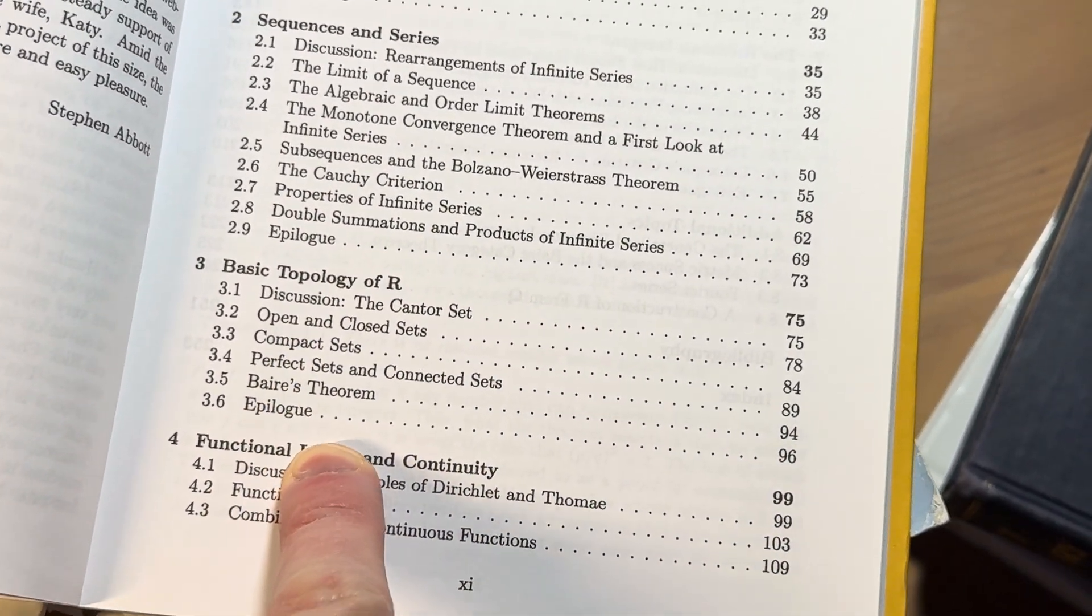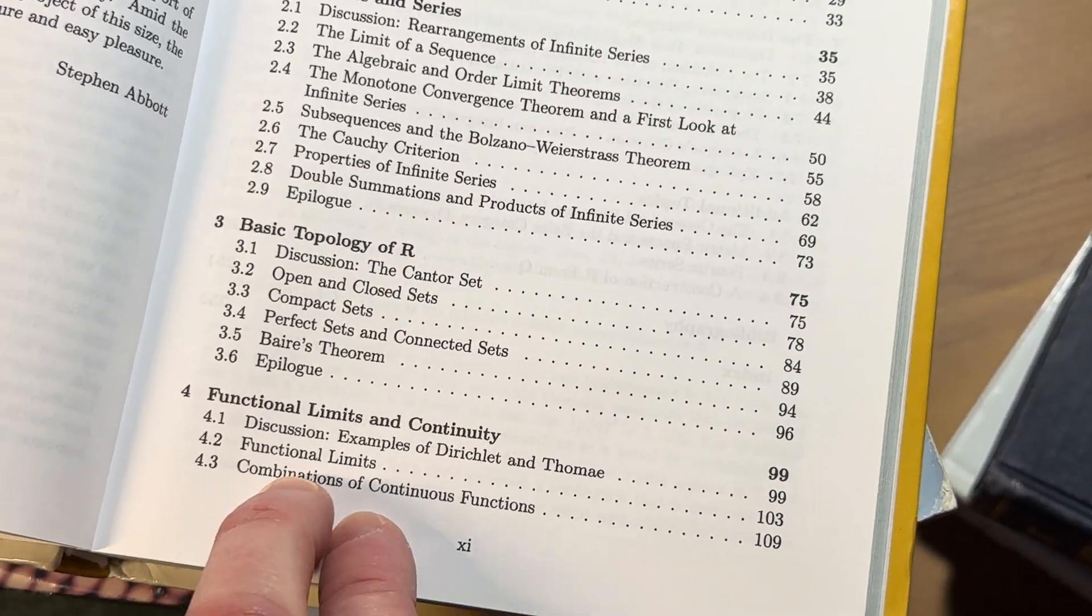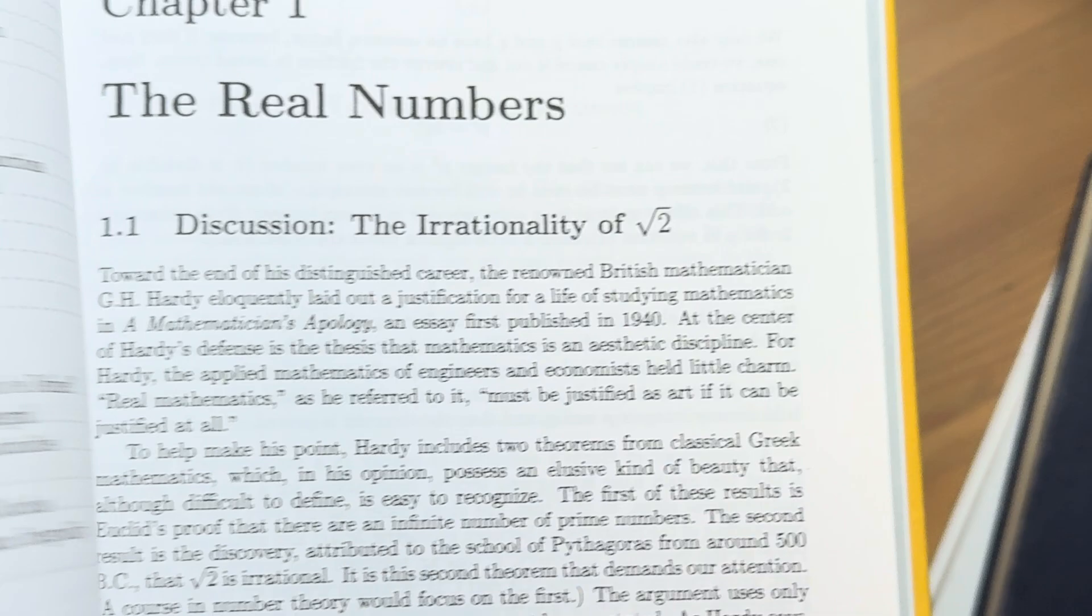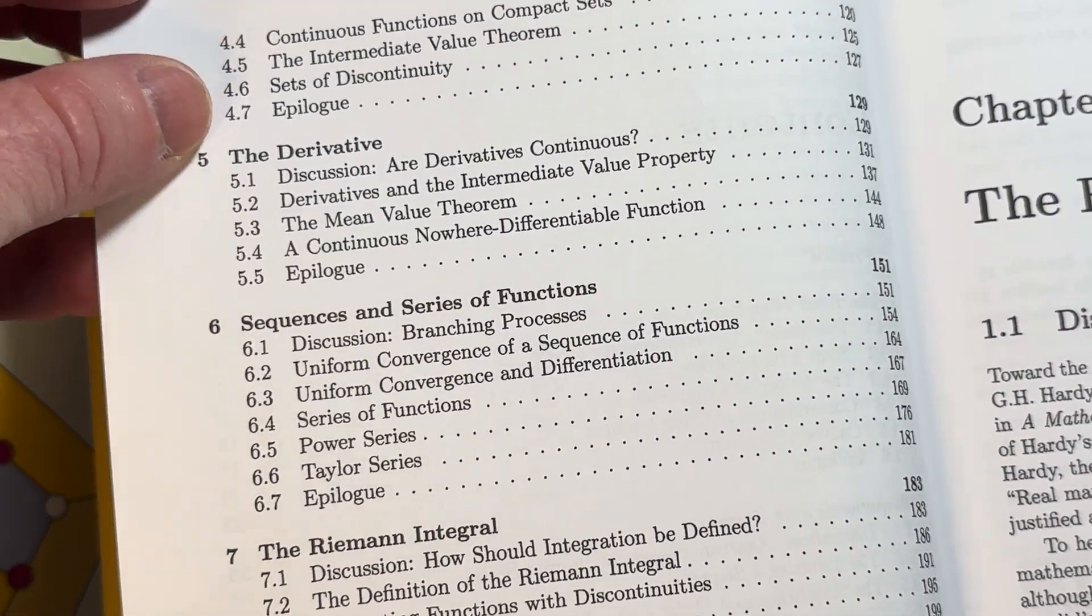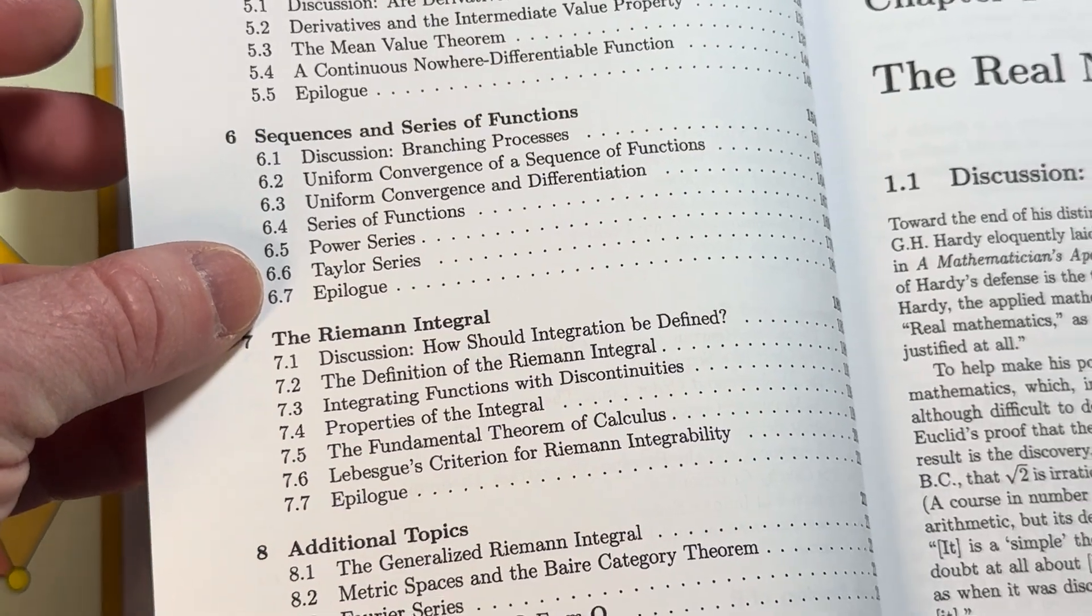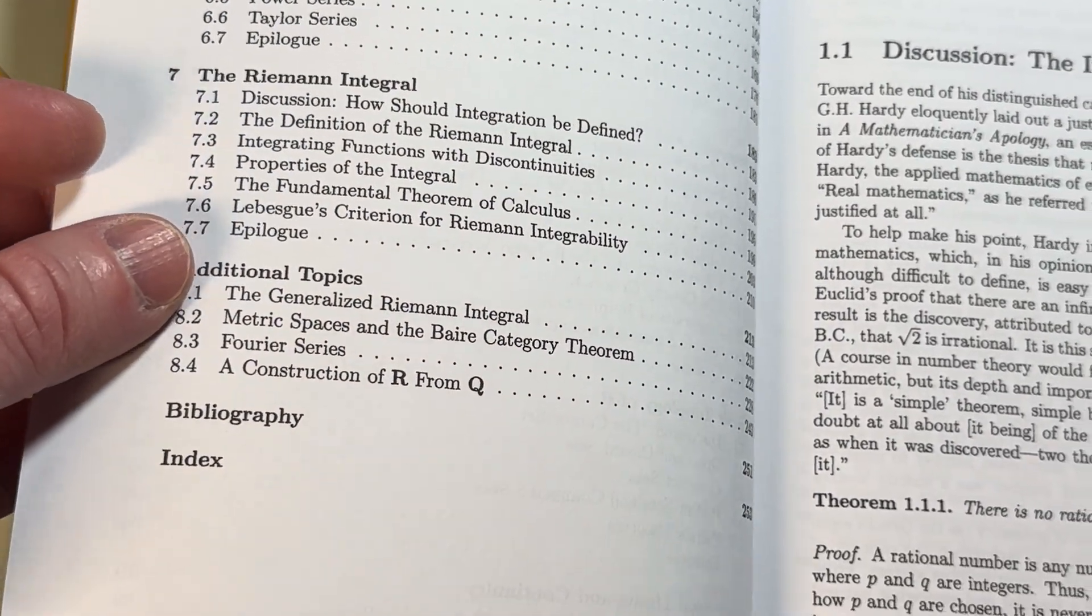Then basic topology of R. Then he talks about limits and continuity. That's chapter 4. And then over here we have the derivative. And then sequences in series of functions. The Riemann integral. And then some additional topics here.